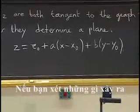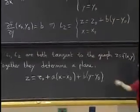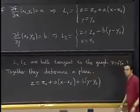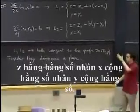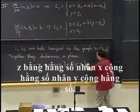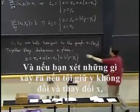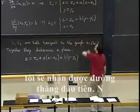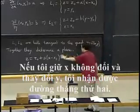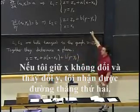If you look at what happens, this is the equation of a plane. Z equals constant times x plus constant times y plus constant. And if you look at what happens if I hold y constant and vary x, I recover the first line. If I hold x constant and vary y, I get the second line.